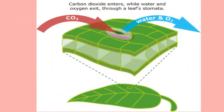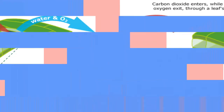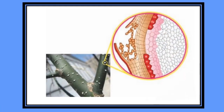Stomata are present in all leaves. Air enters and leaves the leaf through stomata. Lenticels are raised pores in the stem of a plant that allow gas exchange between the atmosphere and the internal tissues.